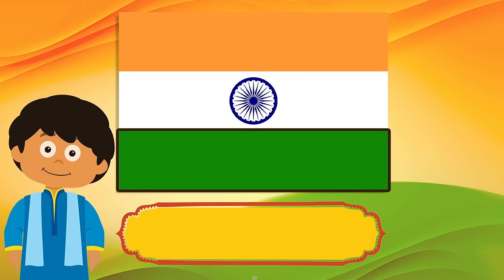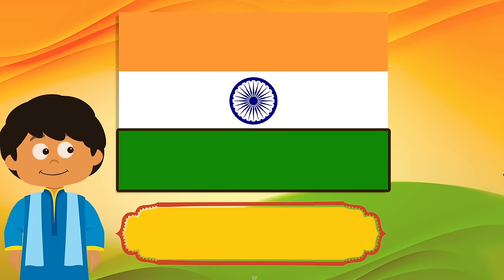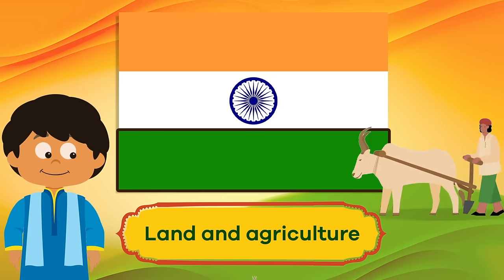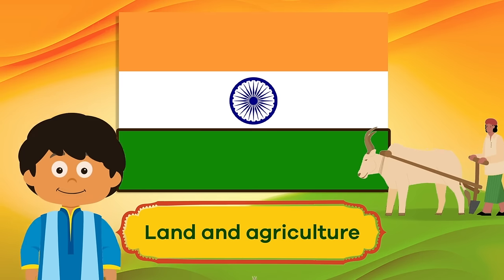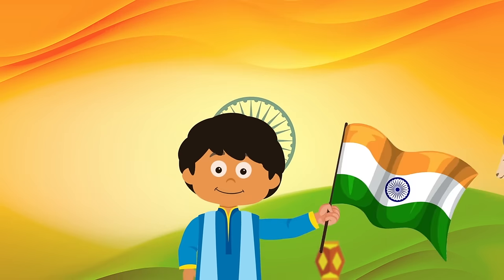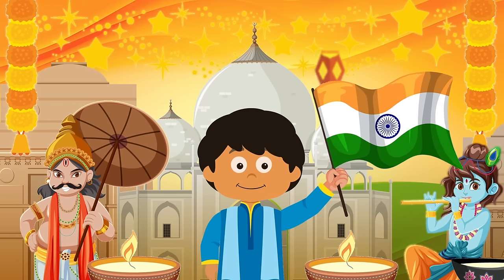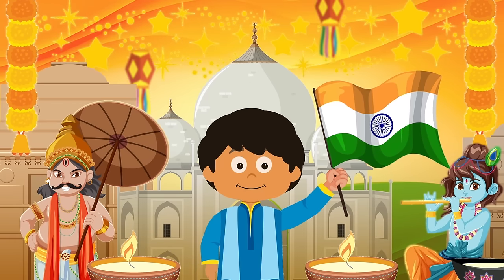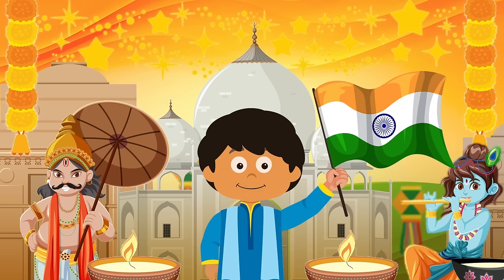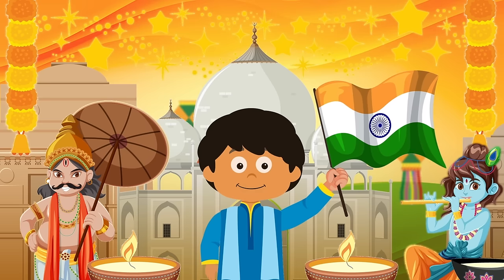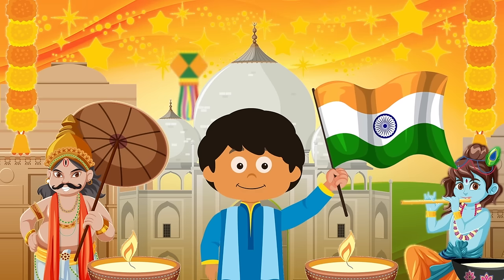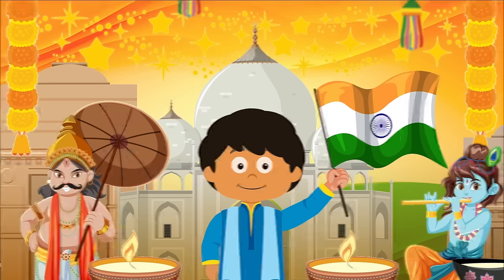The green stripe represents the land, agriculture, and the deep ties to the productivity of the land. The flag of India describes the values of India's people, culture, religious traditions, and contributions to civilization.